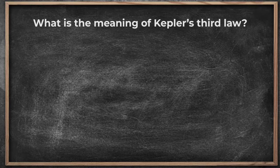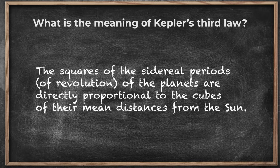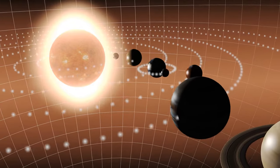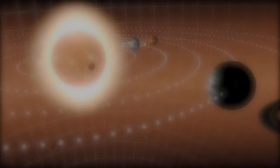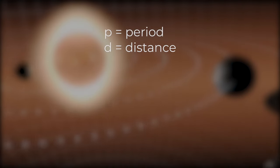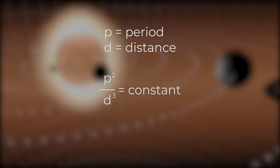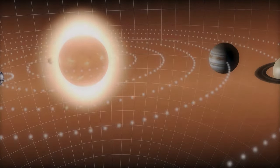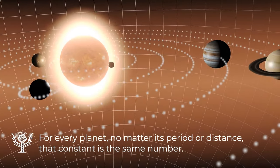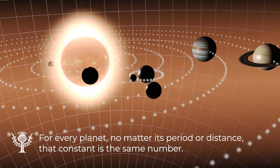Kepler's third law states that the squares of the sidereal periods of revolution of the planets are directly proportional to the cubes of their mean distances from the Sun. Basically, it's saying that how long a planet takes to go around the Sun — its period — is related to the mean of its distance from the Sun. That is, the square of the period divided by the cube of the mean distance is equal to a constant. For every planet, no matter its period or distance, that constant is the same number.